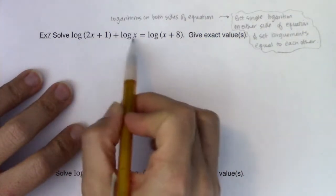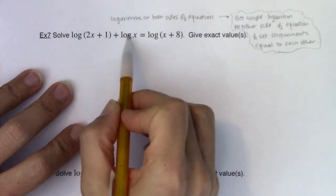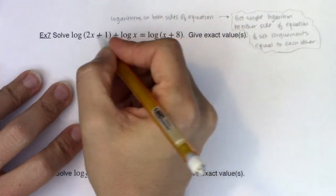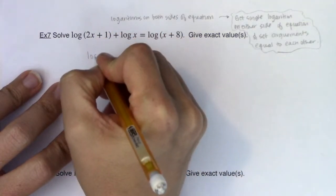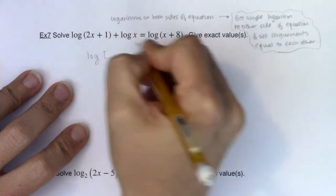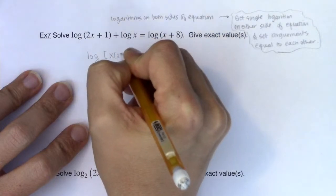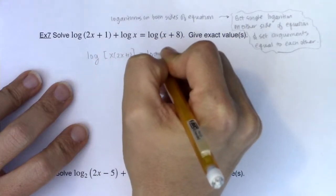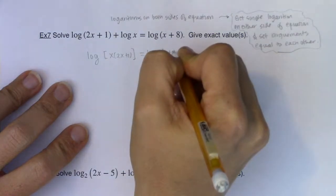But really, it doesn't matter the base. As long as I'm adding two separate logarithms, I can use the product property of logarithms and combine these into a single logarithm as long as the argument is now a product. Okay? And that will be equal to log of x plus 8.